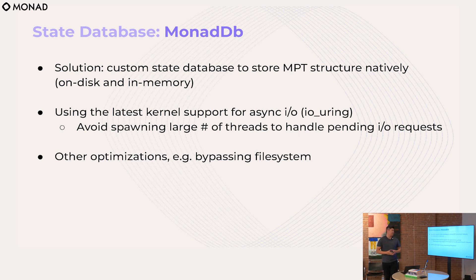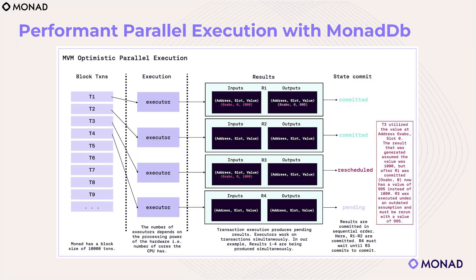The solution was to build a custom database for storing Merkle tree data called MonadDB. It uses async I/O — specifically io_uring — and has a bunch of other optimizations like bypassing the file system. It's just really efficient storage for Merkle tree data, so when we do parallel execution and run all these transactions in parallel, we're able to pull the state dependencies from disk really fast.